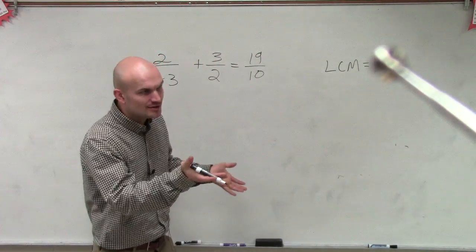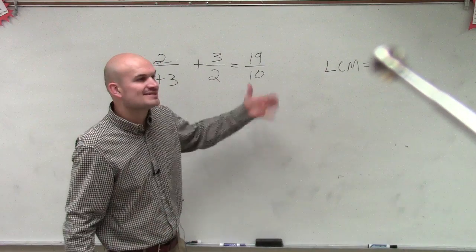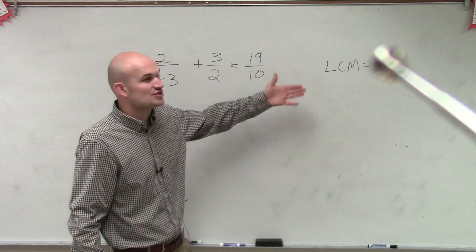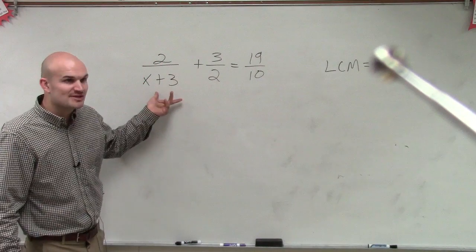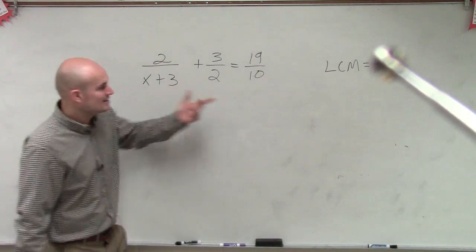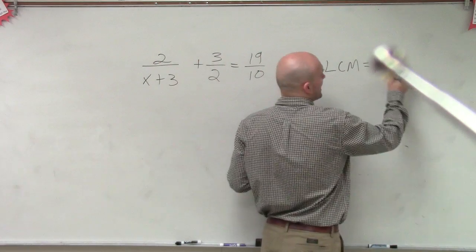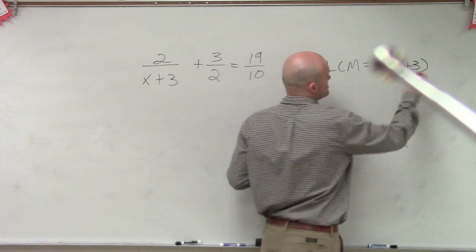So you could use 20. There's nothing wrong with it. But you're going to have to simplify your answer. So it's best to try to simplify it at the beginning by using your least common multiple. And then we also have to include the x plus 3. So the least common multiple is going to be 10 times x plus 3.